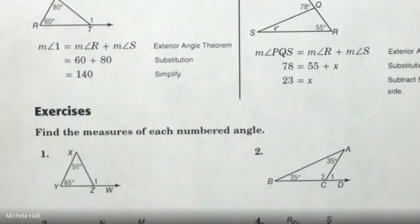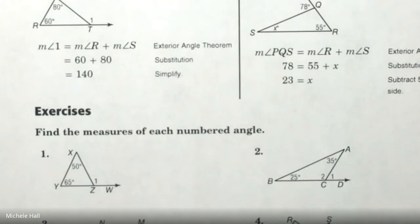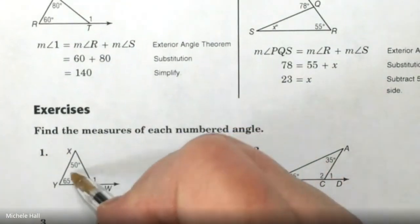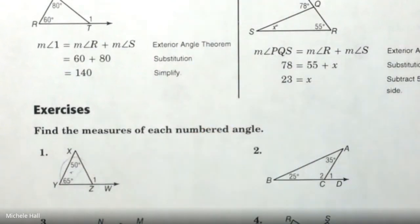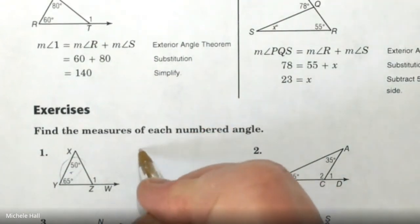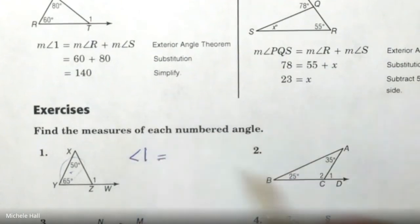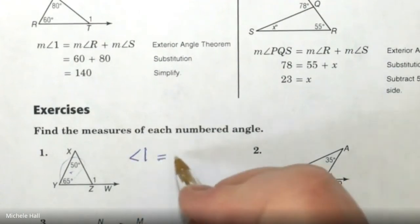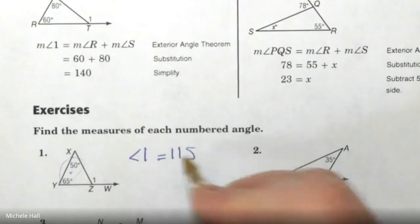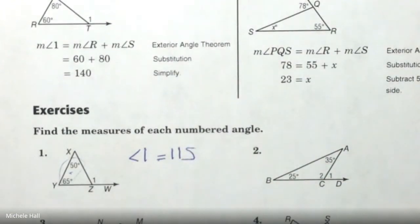Go right to the exercises. I need to find the measure of angle 1 — it's an exterior angle. What is this exterior angle going to equal? It equals these two angles over here being added up. So 65 plus 60 — angle 1 equals 125.